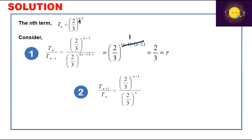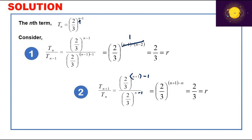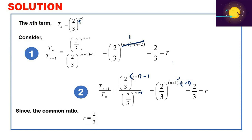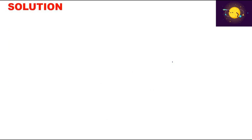For the second ratio, tn+1/tn: tn+1 = (2/3)^(n+1-1) = (2/3)^n, and tn = (2/3)^(n-1). Dividing gives (2/3)^n / (2/3)^(n-1) = (2/3)^1 = 2/3. Since both ratios equal 2/3, the common ratio r = 2/3 is the same, so this sequence is confirmed to be a geometric progression.